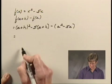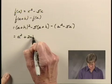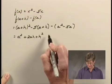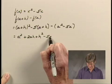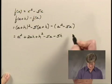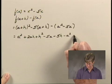Now let's square a plus h. We get a squared plus 2ah plus h squared. And using the distributive law here, I have minus 5 times a minus 5h. And subtracting here, we get minus a squared plus 5a.